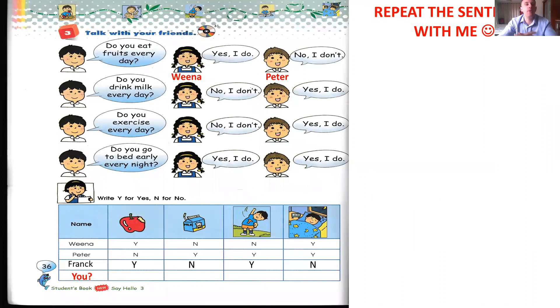We will make a review with yes I do, no I don't. First, do you eat fruits every day? Repeat after me. Yes, I do. No, I don't. Do you drink milk every day? No, I don't. Yes, I do. Do you exercise every day? No, I don't. Yes, I do. You can do like this for no and yes. It's possible. Do you go to bed early every night? Yes, I do. Good habit.